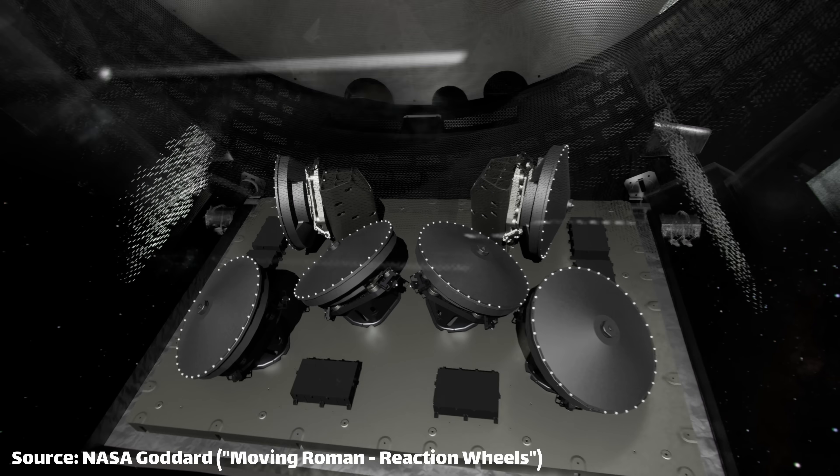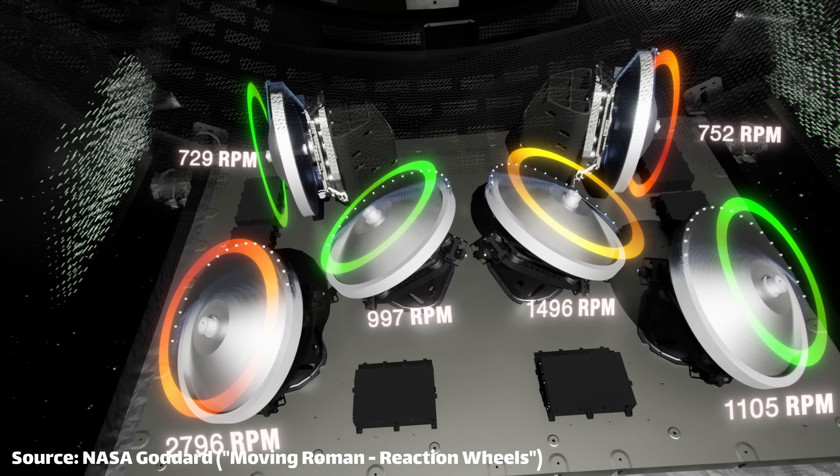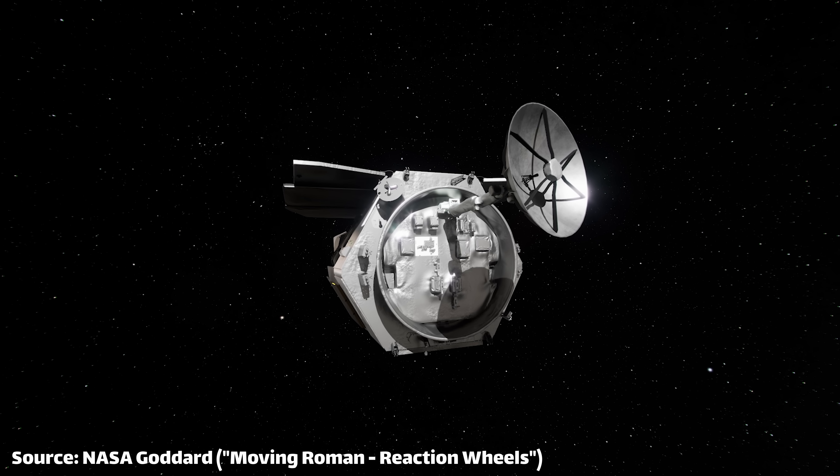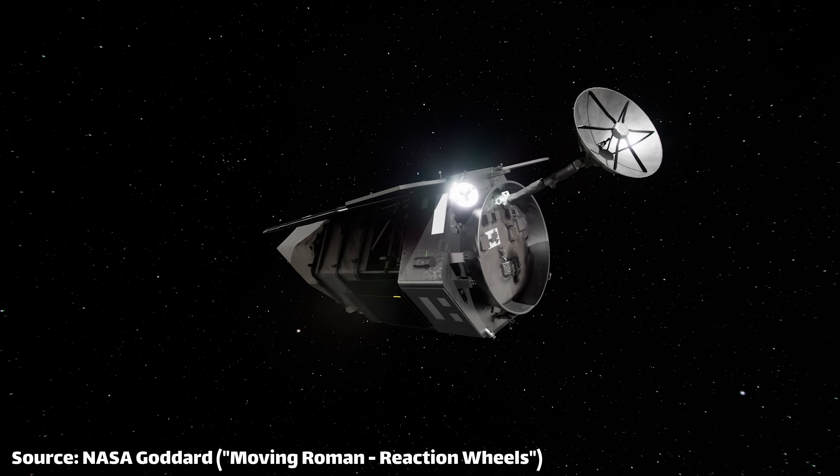So first, what's a reaction wheel? Well, it's basically just a flywheel that you spin up or down. When placed on a satellite, it allows you to change the orientation of the spacecraft.